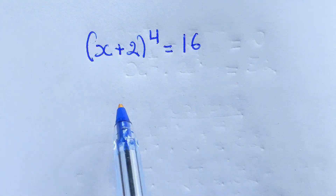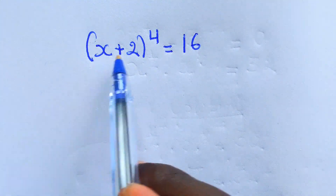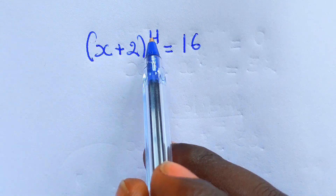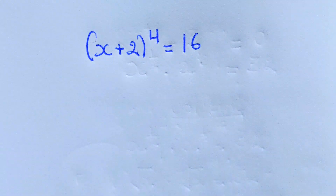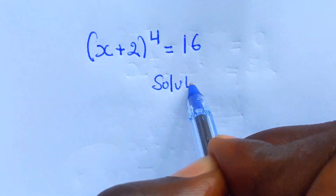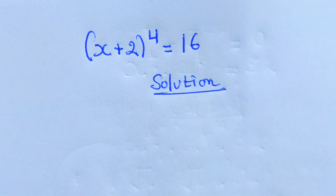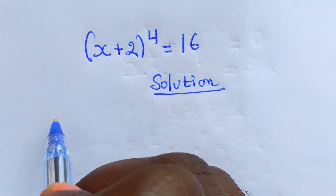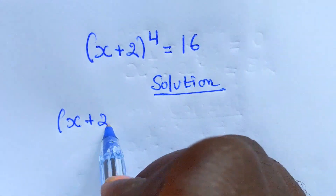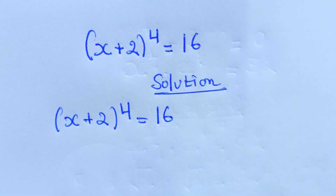Welcome to this platform. Today's video we have been given the question: x plus 2, to the power 4, equals 16. So our solution — we have x plus 2 to the power 4 equal to 16.